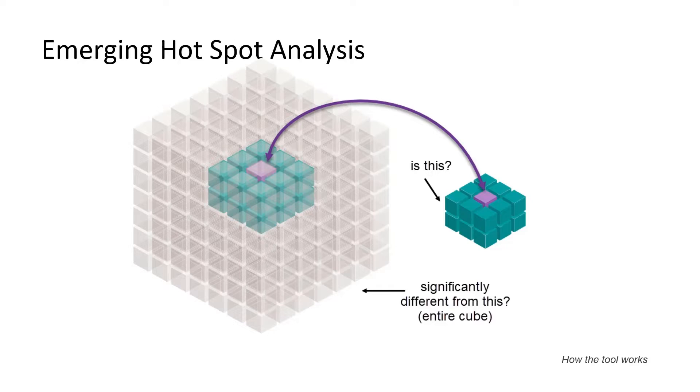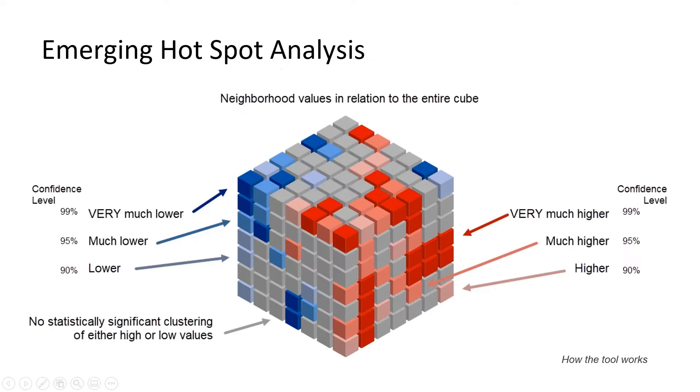categorizing it as having similar values, significantly higher values, or significantly lower values than the cube as a whole. It assesses how clustered the values in the neighborhood are, and whether the clustering of either high or low values is statistically significant at the 90, 95, or 99% confidence level.